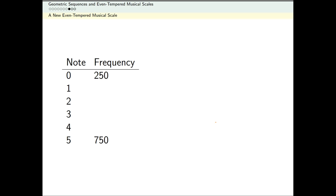Again, let's let R be our common ratio. To go from note 0 to note 1, I should multiply the frequency by R. To go from note 1 to note 2, I should multiply the frequency by R. So I get R squared.